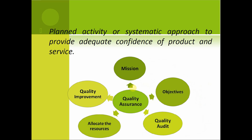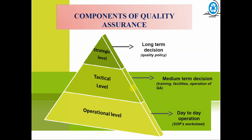Quality Assurance involves a mission, objectives, and quality audit. Resources are allocated accordingly. Components of Quality Assurance include Long Term Decisions, Strategic Level, Tactical Level, and Operational Level.